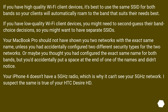If you have high quality Wi-Fi client devices, it's best to use the same SSID for both bands so your clients will automatically roam to the band that suits their needs best. If you have low quality Wi-Fi client devices, you might need to second-guess their band choice decisions, so you might want to have separate SSIDs. Your MacBook Pro should not have shown you two networks with the exact same name, unless you had accidentally configured two different security types for the two networks.